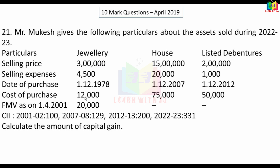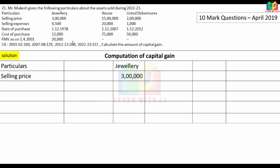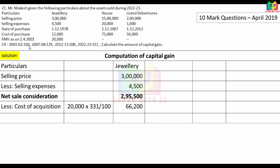Cost of purchase: Rs.12,000. Fair market value: Rs.20,000. The higher fair market value is taken. Indexed cost is calculated using cost inflation index: Rs.20,000 into 331 divided by 100 (as it is pre-2001), giving Rs.62,200 minus net sale consideration. This gives the long-term capital gain for jewelry.